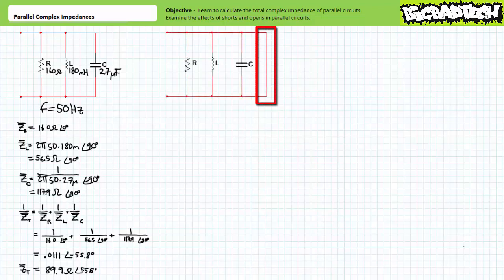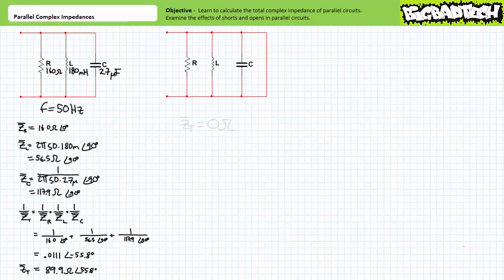If however a short in the form of a zero ohm resistive wire was placed across the terminals of the parallel relationship or any single element within this relationship, note the short effectively acts like the addition of yet another path in parallel, only this time being one with zero ohm impedance magnitude. As such, the total impedance of the shorted parallel relationship drops to zero ohms because the short routes all current around the parallel relationship. In summary, shorts in parallel circuits totally wreck that parallel circuit no matter where the short occurs — impedance in shorted parallel circuits immediately drops to zero ohms.